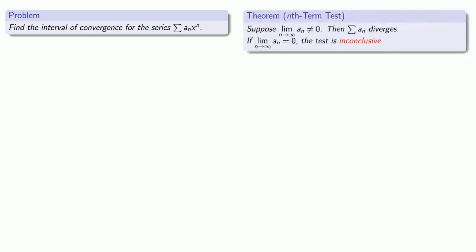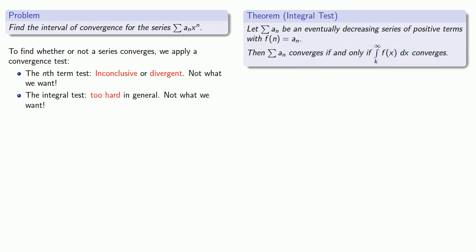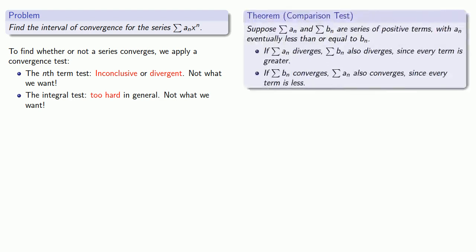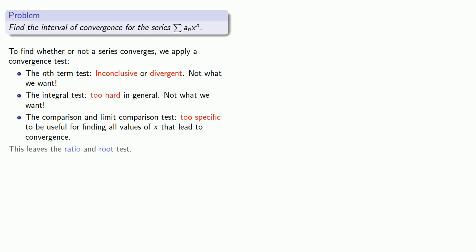Let's go through our tests. The nth term test tends to give us either inconclusive answers or tells us the series is divergent, which isn't what we want. The integral test is powerful but too hard to use in general. The comparison and limit comparison tests are too specific to be useful for finding all values of X that lead to convergence, since we'd have to compare to a specific series whose convergence we already know. What this leaves us with is the ratio and the root test.